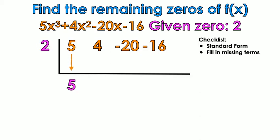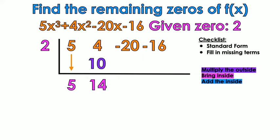I'm going to bring down the 5, and then I am going to multiply 2 times 5. Multiply the outside, bring it inside, so that's 10. Then I'm going to add the inside, 4 plus 10 is 14. Multiply the outside, 2 times 14 is 28, bring it inside. Add the inside, negative 20 plus 28 is 8.